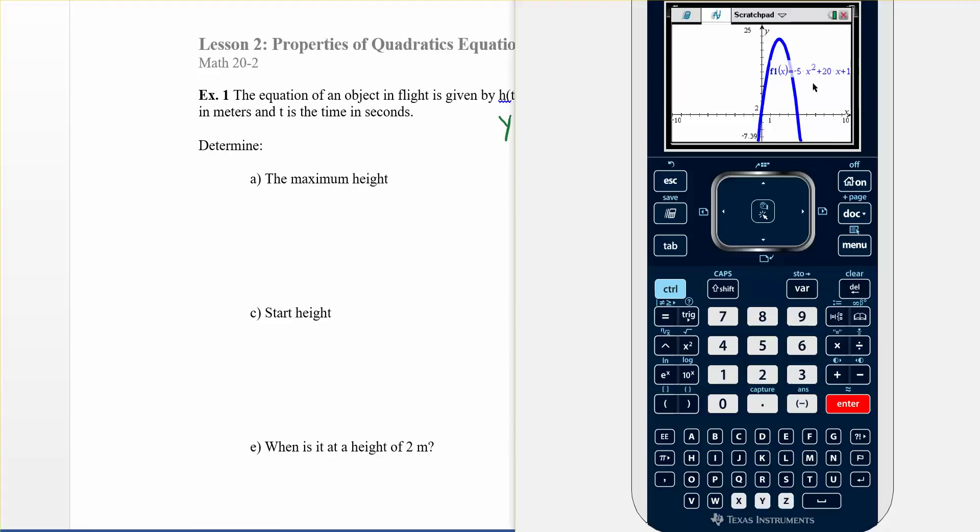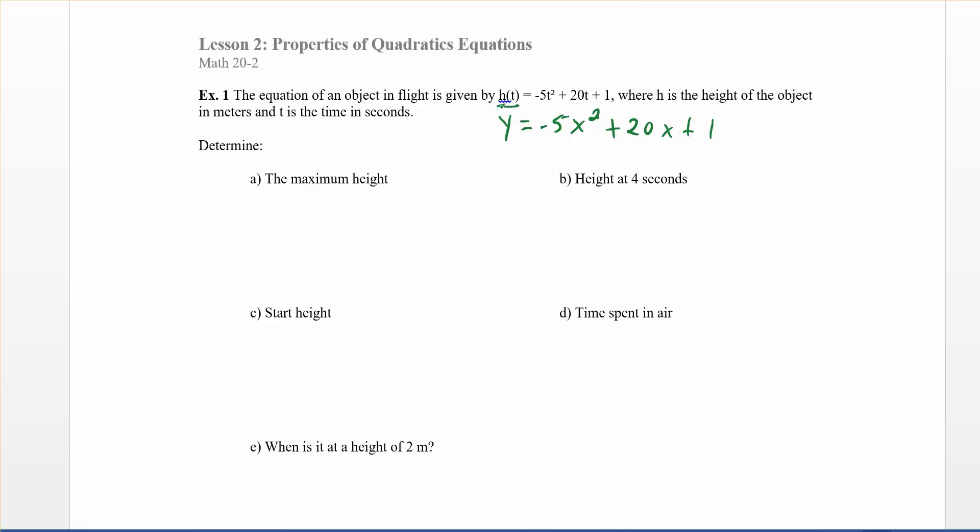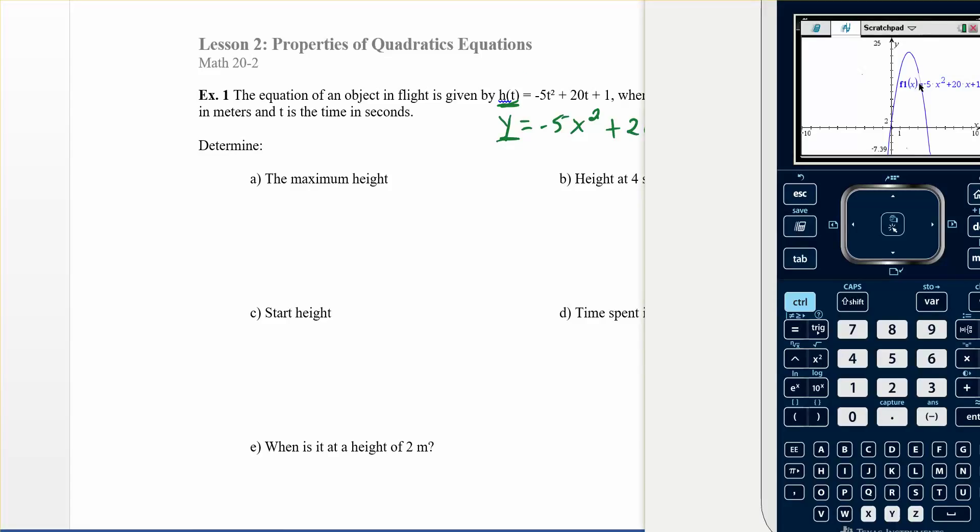So it's asking for the maximum height, so the height is my y axis, right? That's the axis right here. And if you look at your equation, the height, right, that's the y, so that's the y, it's the up and down. So it's saying what's the highest that this thing will ever be. And what it's really saying is what's the vertex, what's the peak of this thing.